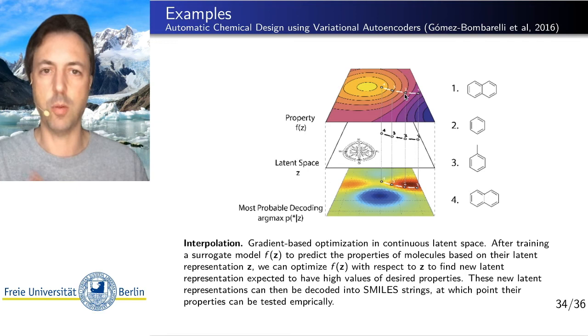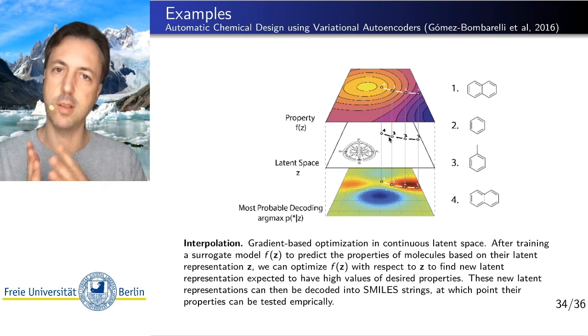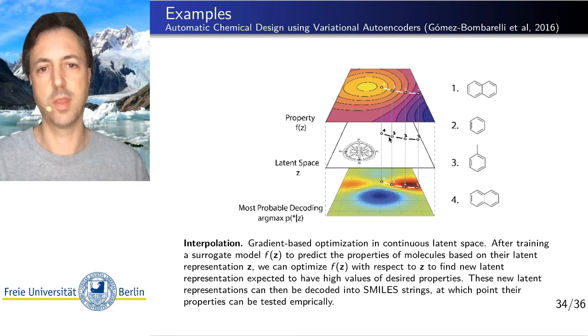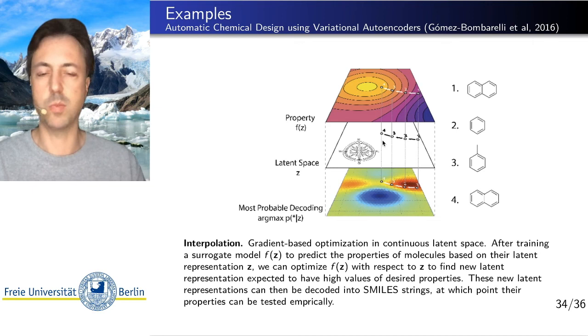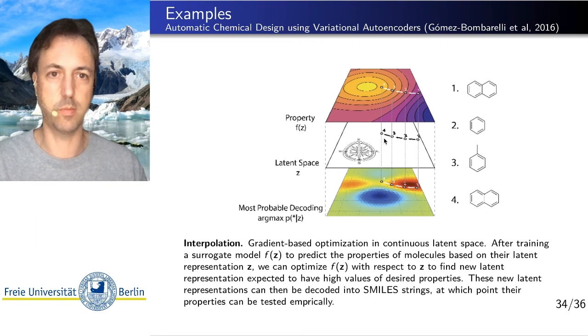So you can keep going in directions where this property that you want to optimize, fluorescence in this example, improves. And this has been shown to be a quite promising approach, this optimization in latent space by these authors. And it has been adopted and used in many, many follow-up works since.